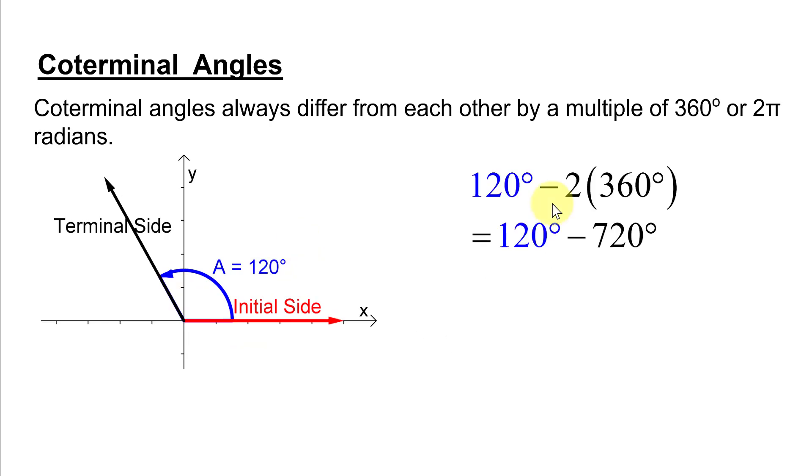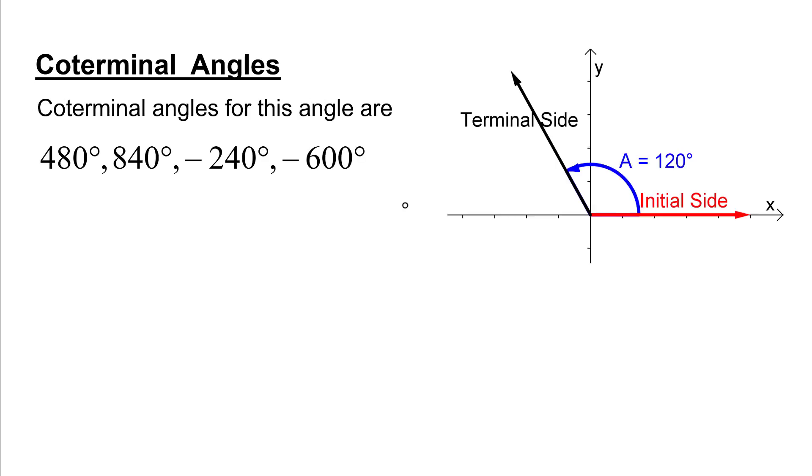Next, I'm going to subtract 2 rotations or I'm going to subtract 720 degrees. That will give me negative 600. And how do we graph negative 600 degrees? It's one full rotation in the negative direction and then another negative 240 degrees. So far, I've found 1, 2, 3, 4 angles that are coterminal to 120 degrees.